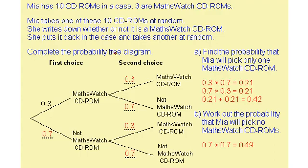We're firstly asked to complete the probability tree diagram. Then we need to find the probability that Mia will pick only one CD-ROM: if she picks one on her first choice, she needs to not pick one on her second choice; if she doesn't pick one on her first choice, she needs to pick one on her second. We add these together for our final probability. We also need the probability that Mia picks no CD-ROMs — not picking one and not picking one — which multiplied gives 0.49.